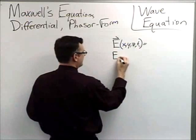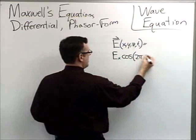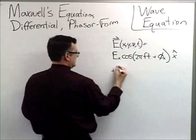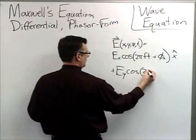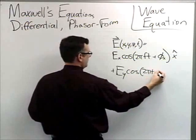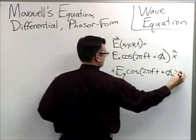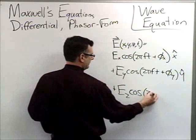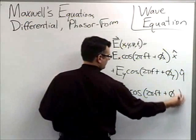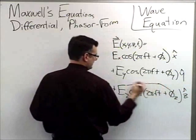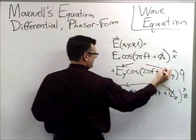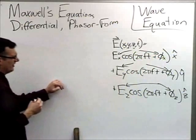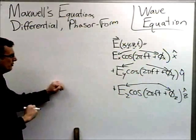The E-field vector written in longhand tedious form has components like Ex cosine(2πft + φx) x̂ plus Ey... and it could be even more tedious because the amplitudes and phases are themselves functions of x, y, and z. There are a lot of positional dependencies floating around, which is one reason we want to put this in the phasor domain.